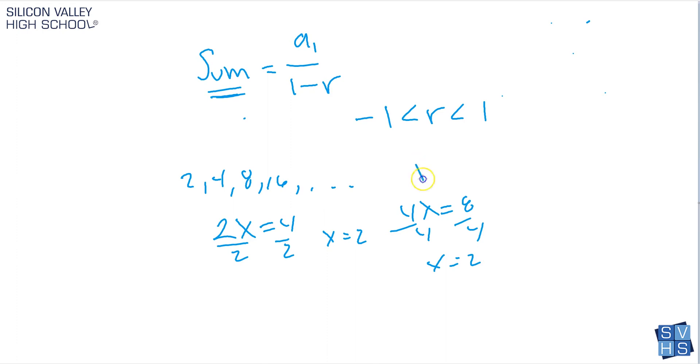So in this one, r is equal to 2. Does this qualify? Is it between 1 and negative 1? No, it's totally too big. It's above 1. So there is no sum for this infinite geometric series. There's simply no sum. It can't be solved.